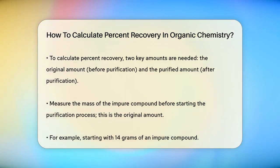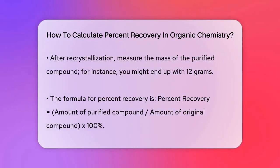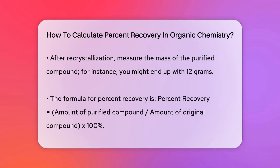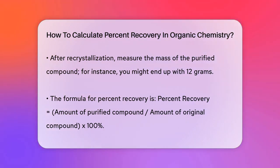Next, after you've completed the recrystallization process, measure the mass of the purified compound. Let's say you end up with 12 grams of pure compound. Now you can calculate the percent recovery using a simple formula: percent recovery equals amount of purified compound divided by amount of original compound, times 100%. Plugging in the numbers, it looks like this: percent recovery equals 12 grams divided by 14 grams, times 100%, which equals 85.71%.